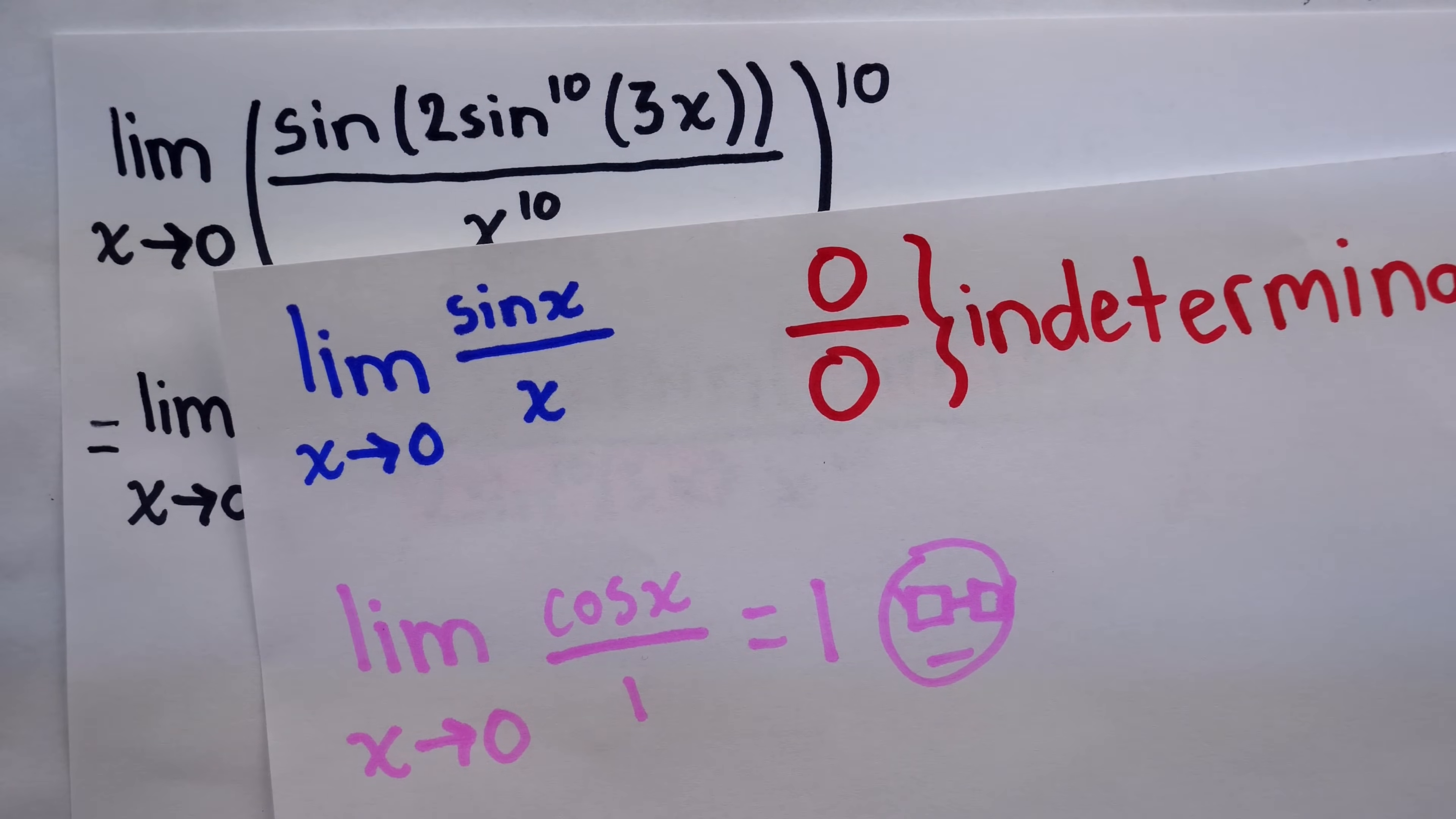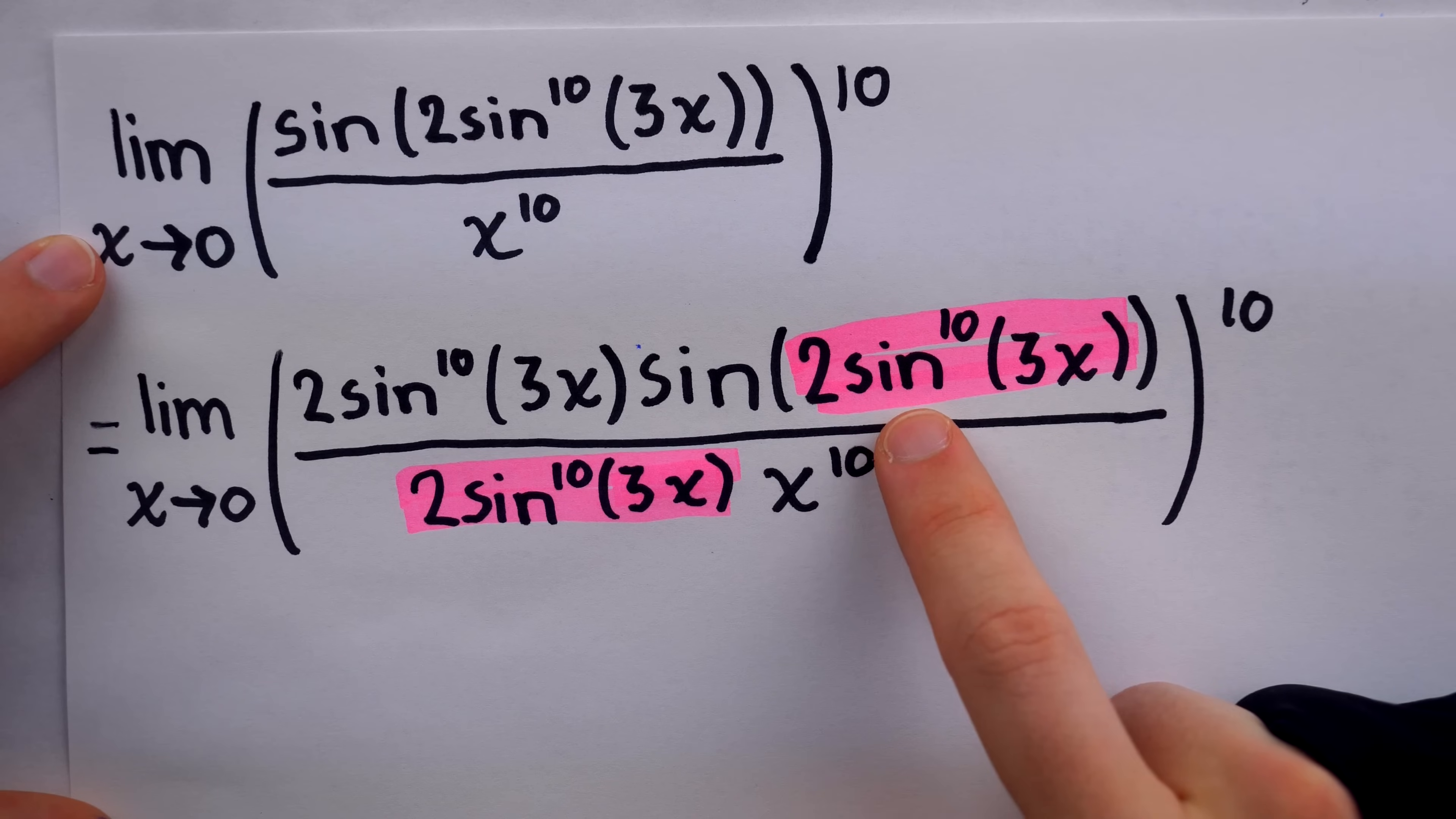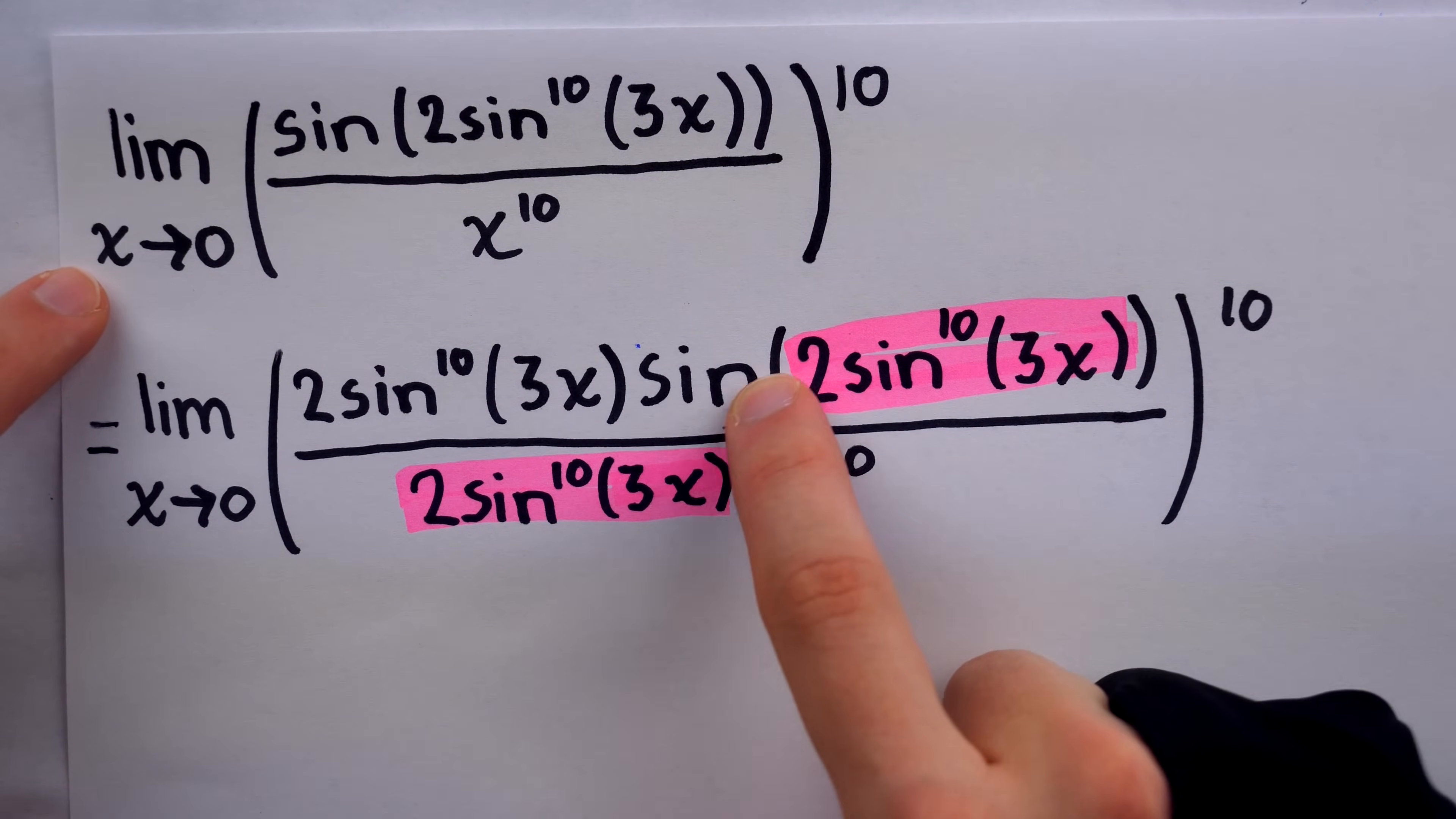But now, we have sine of 2 sine to the 10 of 3x over 2 sine to the 10 of 3x. Of course, there's more down here as well, but that's what we're focused on right now. Now, in order to apply the known fact that this limit, sine x over x as x approaches 0, is 1, we would need this thing inside of sine to be approaching 0. Well, thankfully, x is approaching 0, and as x approaches 0, so too does 2 sine to the 10 of 3x. Of course, that's because the sine function is continuous, and sine of 0 is 0, and all of these transformations to the function don't break its continuity. So this thing inside, that sine function, is going to 0. It's being divided by that input as well, and of course, that, again, is going to 0. So we have what we need, sine of stuff over stuff, as that stuff goes to 0. This, then, is equal to 1.